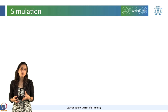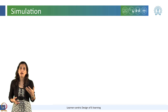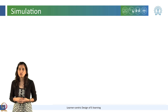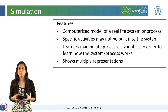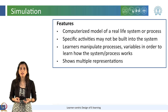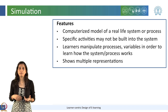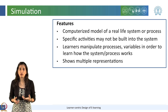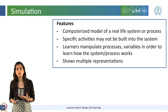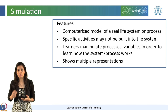Here we will use the example of simulation to show how we can analyze the affordances of a technology tool. Simulation, for example, is a computerized model of a real-life system or process where specific activities may not be built into the system; learners can manipulate processes and variables to learn how the system or process works. It may also show multiple representations of the process like a graph, diagram, equations, etcetera.